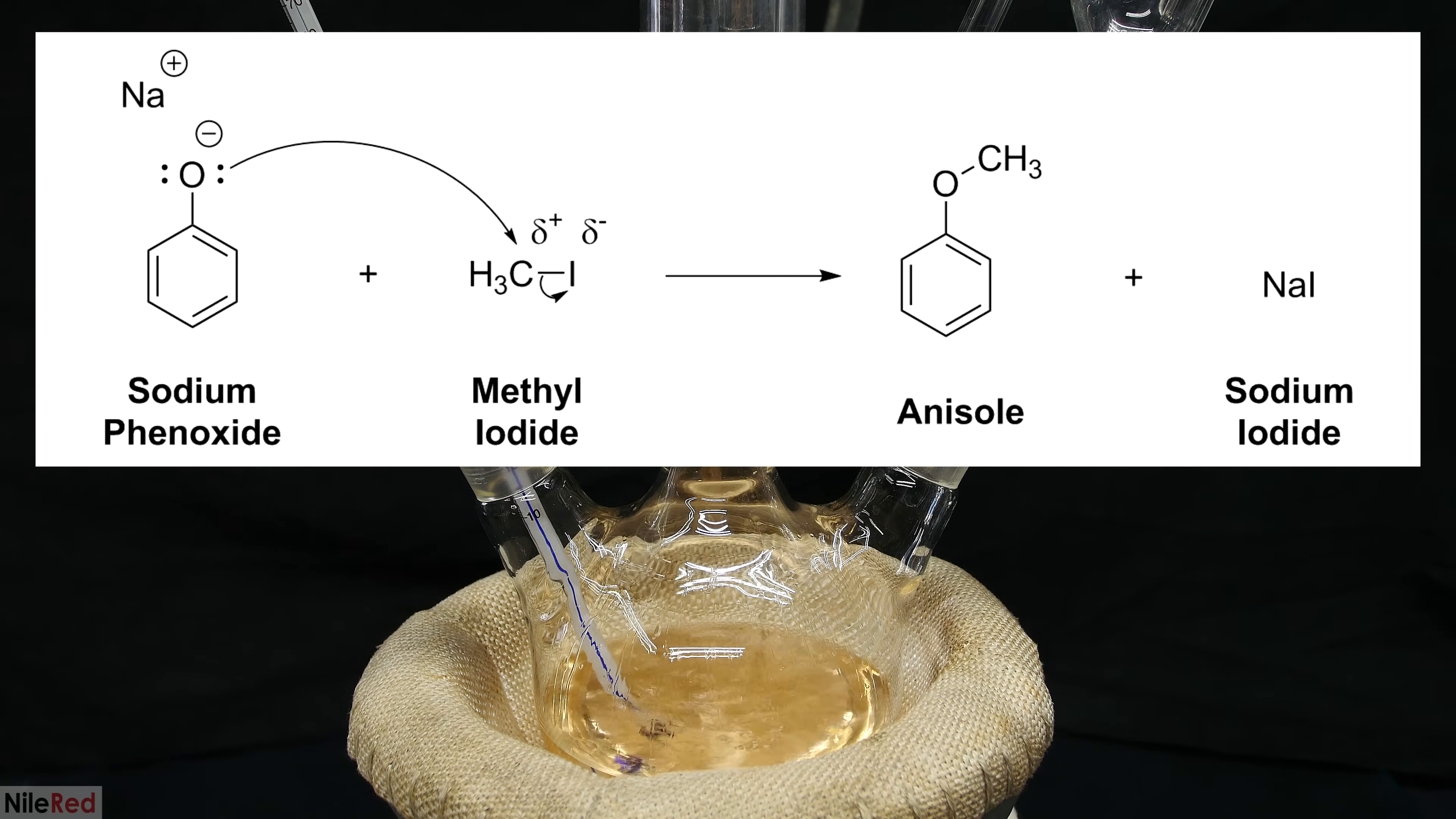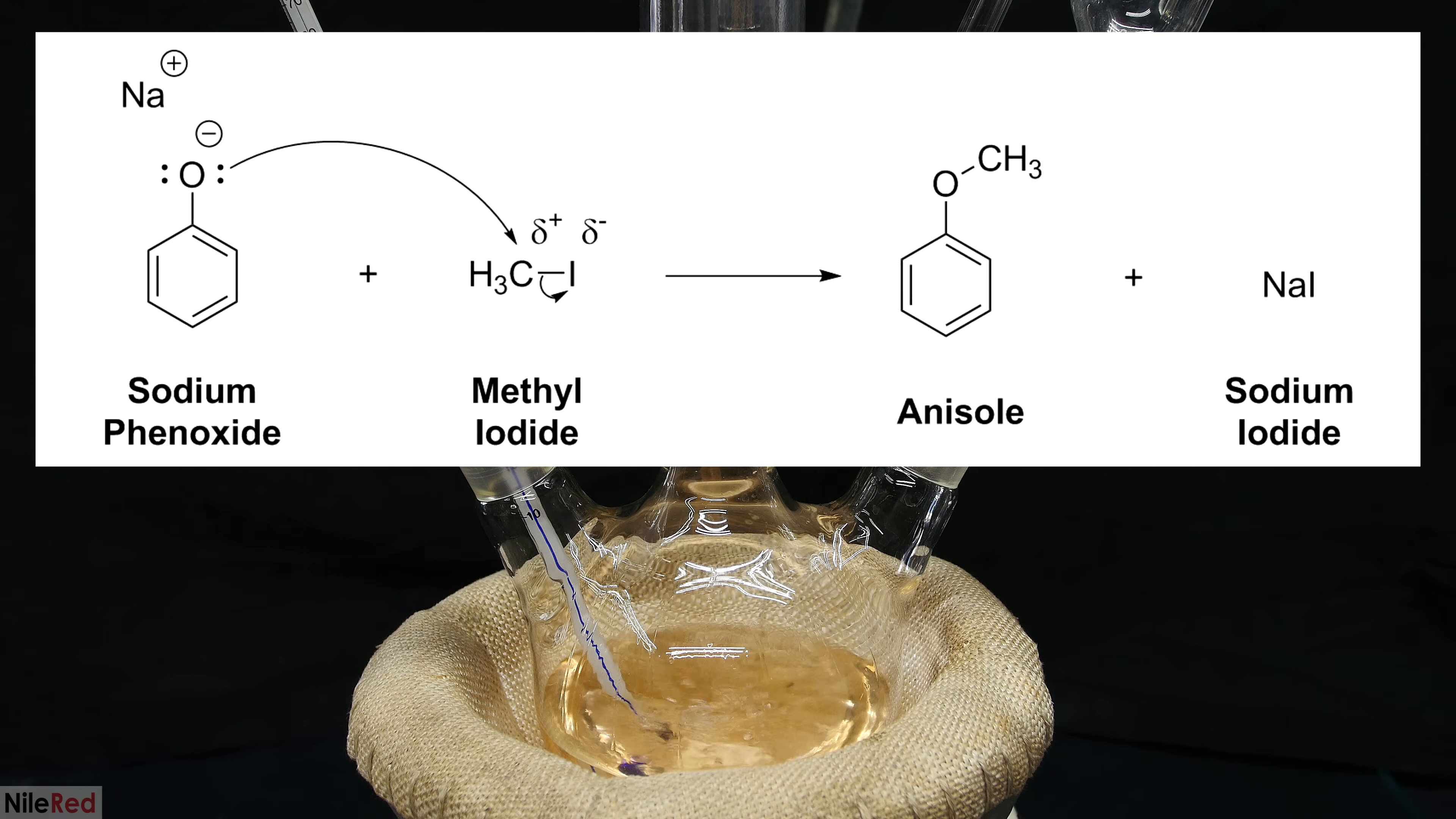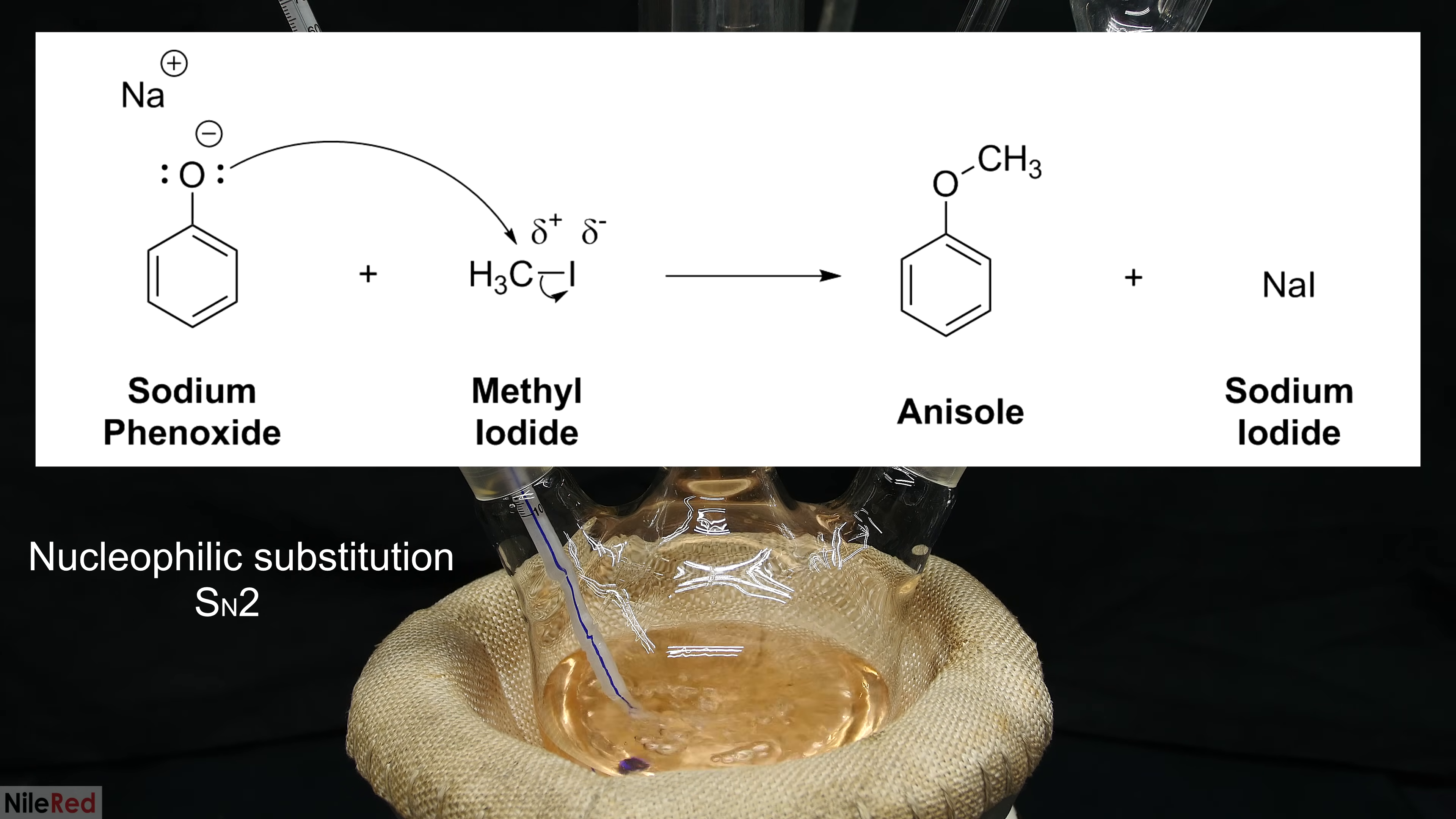In our case, the electron-rich species is the sodium phenoxide, and it's acting as a nucleophile. As the phenoxide approaches the methyl iodide in solution, the bond will become polarized, and the free electrons in the phenoxide will attack the partial positive of the carbon. A bond between the oxygen and the carbon will form at the same time that the carbon-iodine bond is broken. This forms our final anisole product, as well as sodium iodide as a side product. The Williamson ether synthesis is a nucleophilic substitution reaction, and it follows the SN2 type mechanism. If you want to know more about nucleophilic substitution reactions or what SN2 is, I've provided a link to another video where I cover it in more detail.